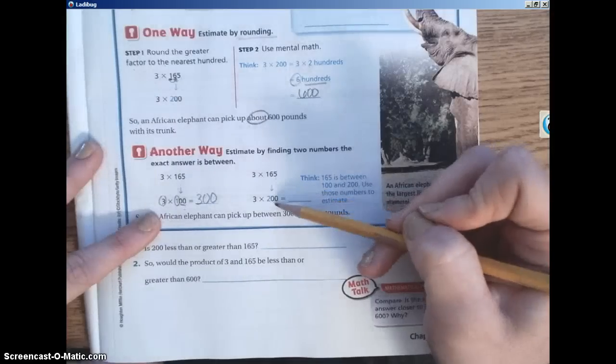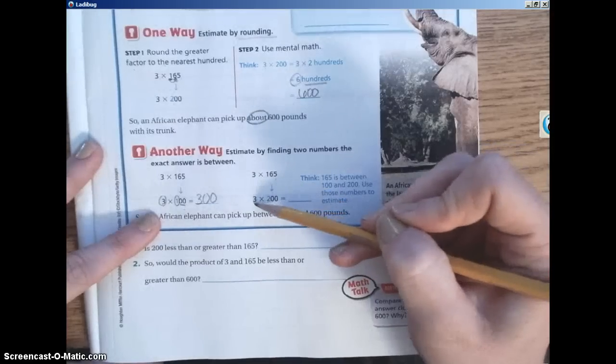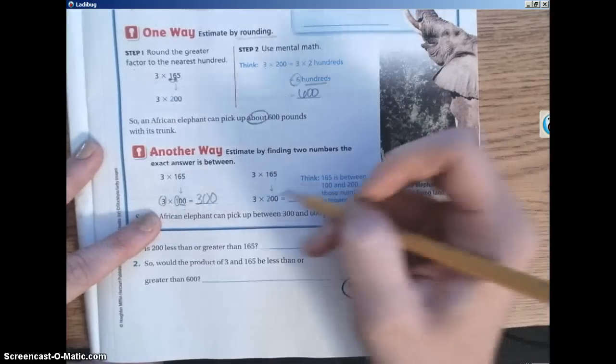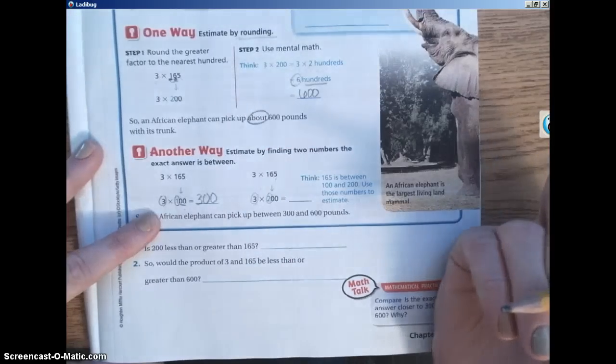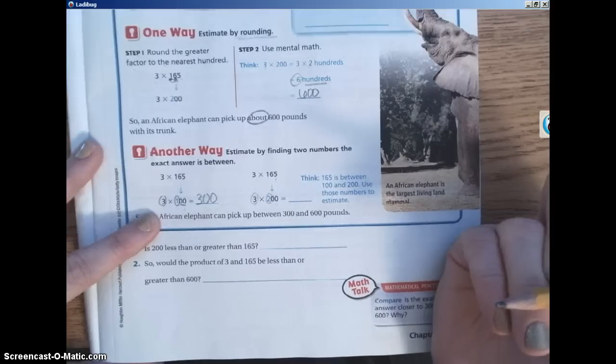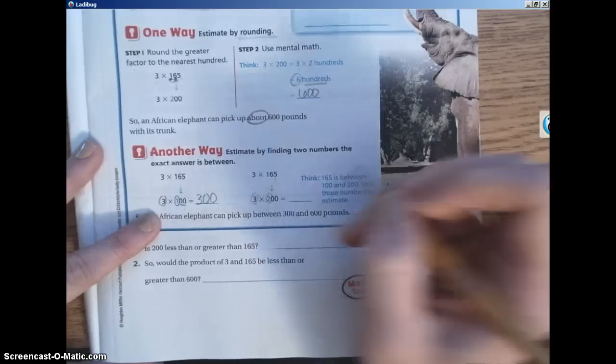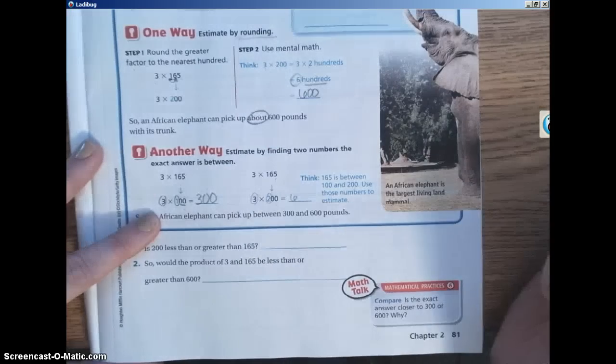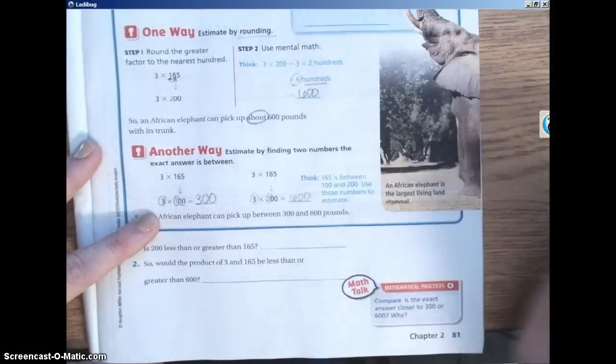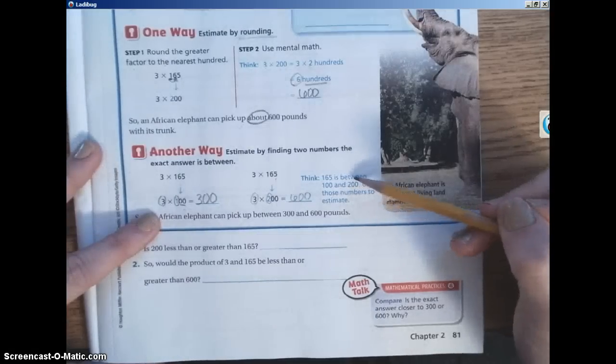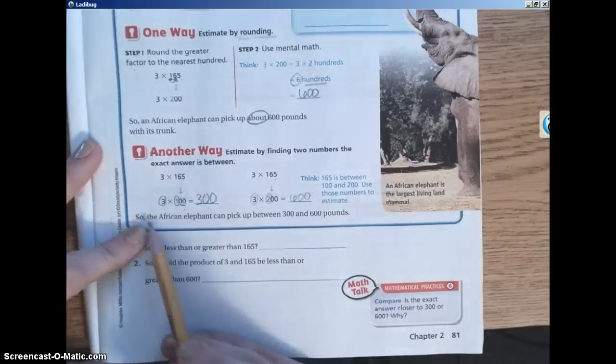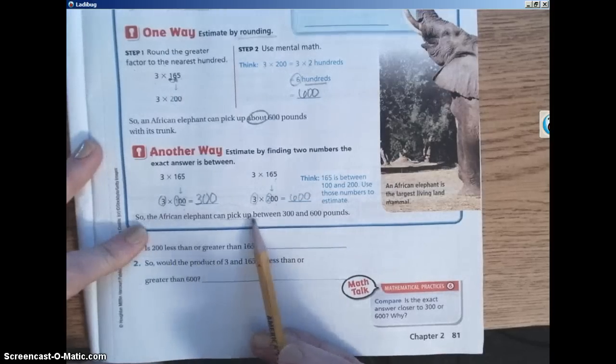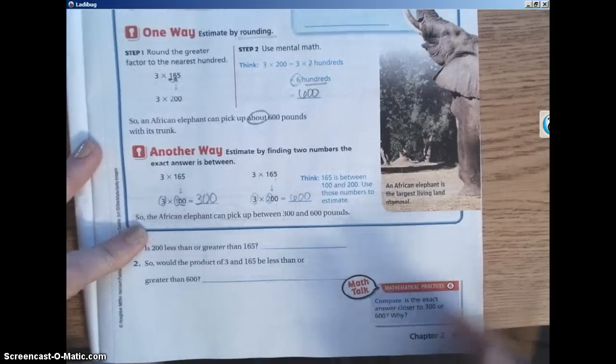Here they're rounding 165 up to 200. So three times 200. So circle the numbers that are greater than zero. So three and two. You're going to multiply those two numbers. Three times two is six. How many zeros do you have to add? Two. So think in your head. 165 is between 100 and 200. And you're going to use those two numbers to estimate. So the African elephant can pick up between 300 and 600 pounds.